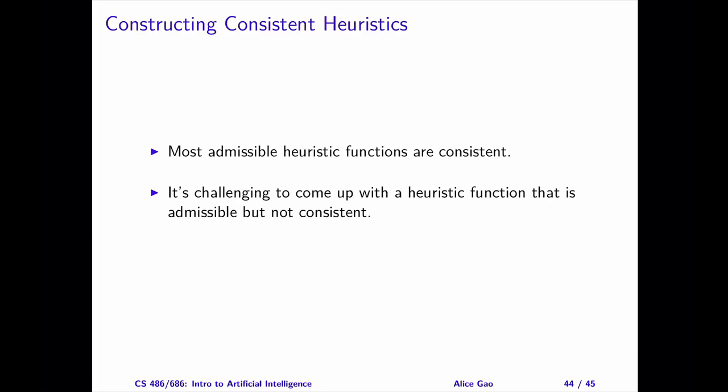After this discussion, you might be wondering: how can we come up with a consistent heuristic? I am not aware of a general procedure to do this. Fortunately, most admissible heuristic functions are consistent. In fact, it is challenging to come up with a heuristic that is admissible but not consistent. Therefore, it is often sufficient to construct an admissible heuristic and verify that it is also consistent using the monotone restriction.